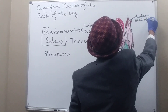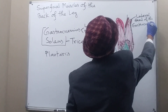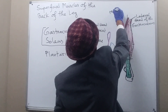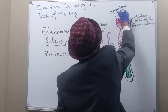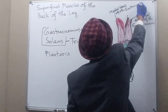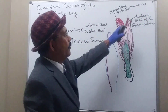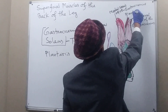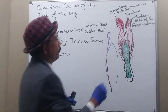This is the lateral head of the gastrocnemius, and this is the medial head of the gastrocnemius. And this here is the plantaris muscle.